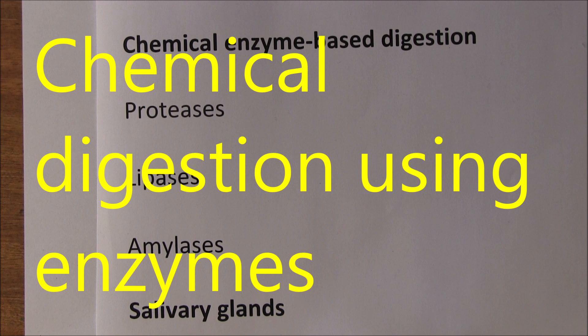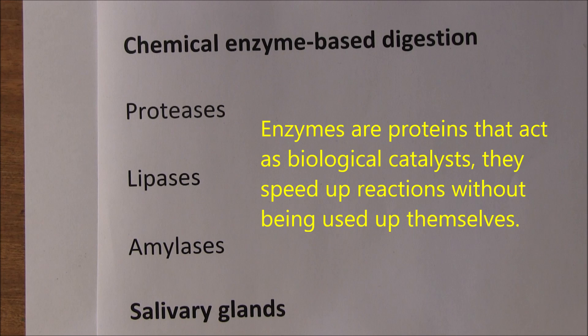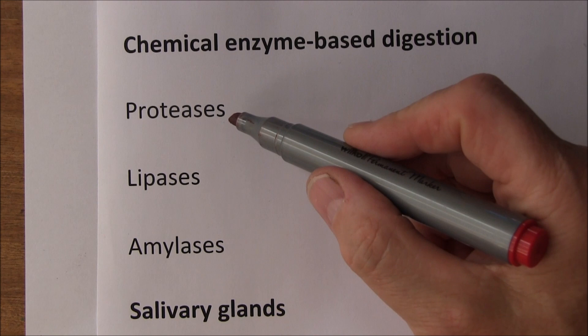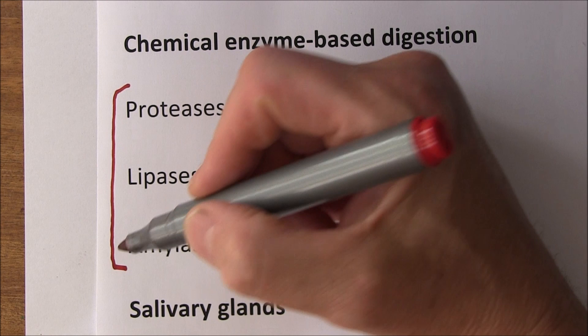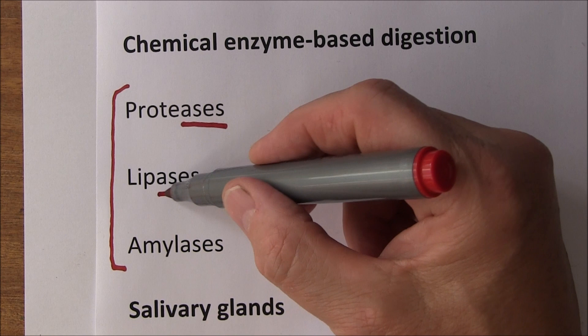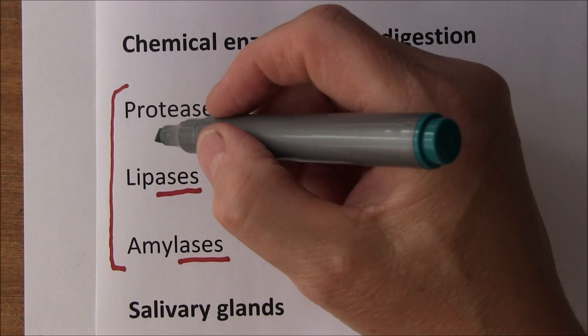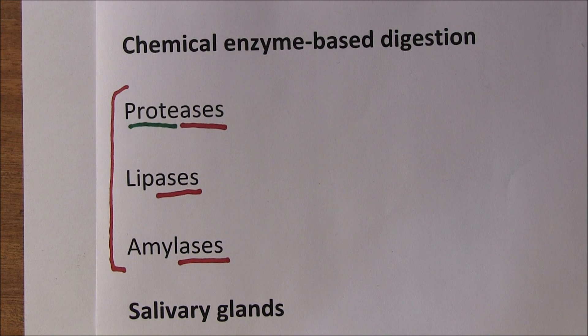Having considered mechanical digestion in the previous video, we're now going to think about chemical enzyme-based digestion. There are three main types of enzymes found in the gastrointestinal tract: proteases, lipases, and amylases. The '-ase' ending means enzyme, and the first part of the word describes the substrate the enzyme works on — so protease is an enzyme for protein.